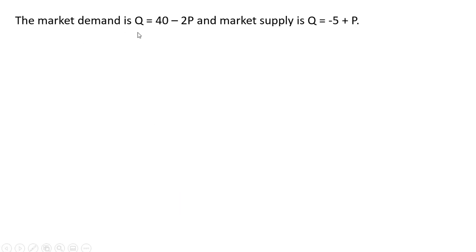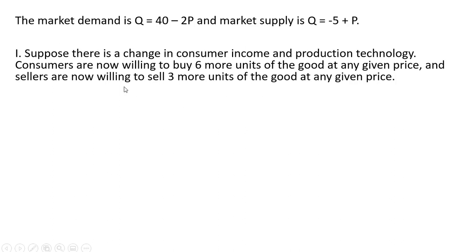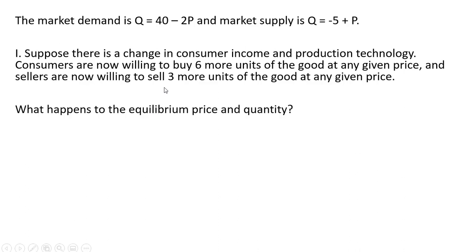The market demand is given as follows, and the market supply is as follows. Suppose there's a change in consumer income and production technology. Consumers are now willing to buy six more units of the good at any given price, and sellers are now willing to sell three more units of the good at any given price. What happens to the equilibrium price and quantity?